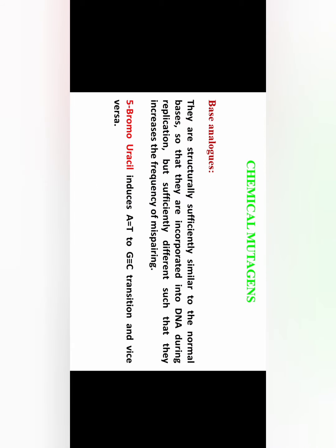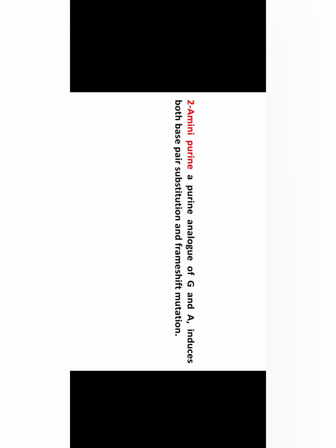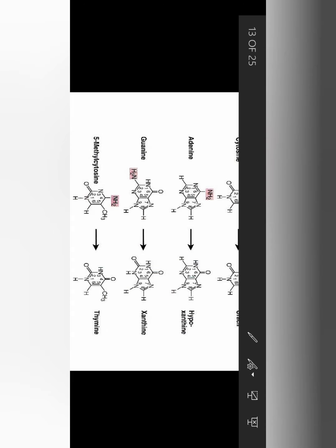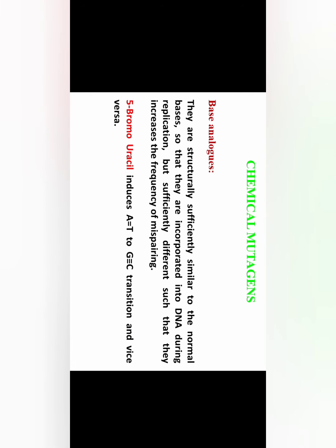Now, chemical mutagens — there are three types: base analogs, nitrous acid, and intercalating agents.